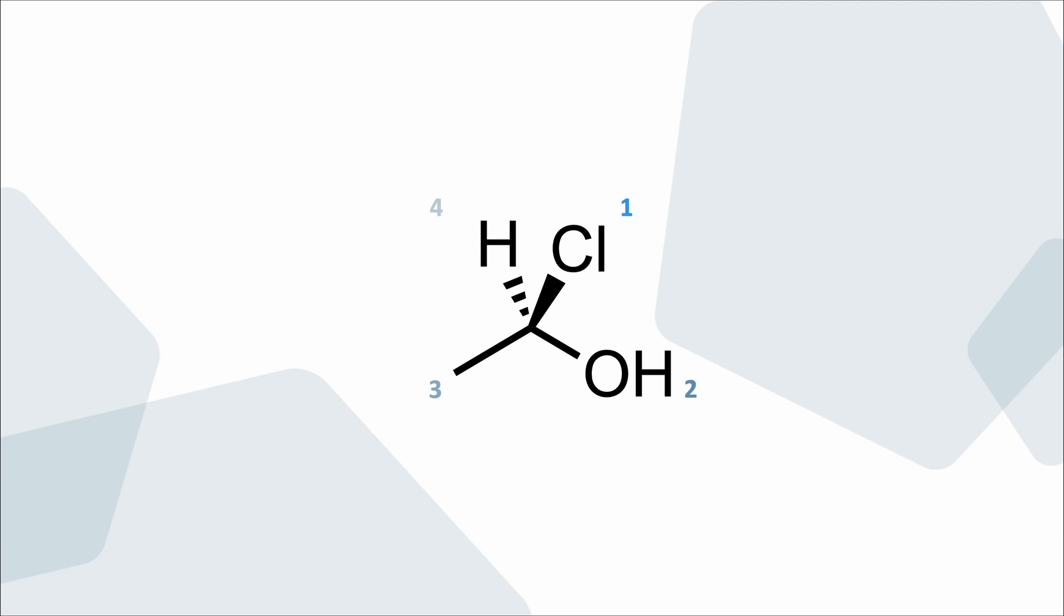If the substituent with the lowest priority points away from us, we can assign the R and S descriptors. If the substituents are aligned clockwise with regard to descending priority, we assign the R descriptor. If they are aligned counterclockwise, we assign S.